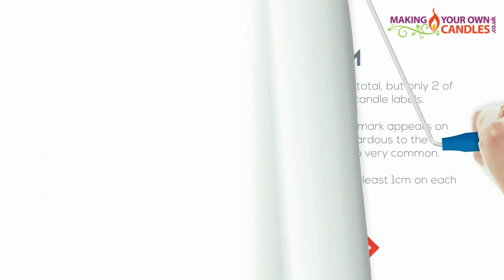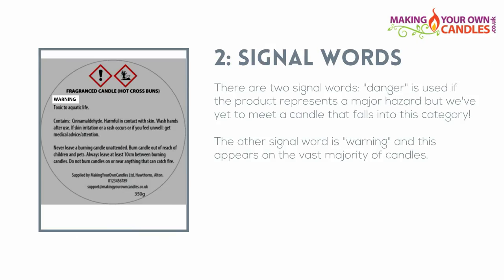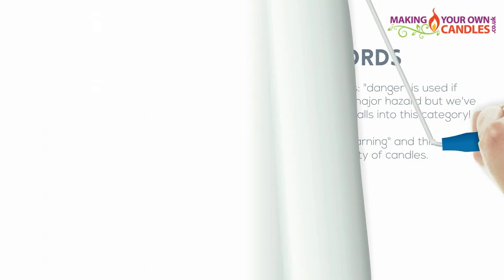Any label for a candle that contains hazardous ingredients must also contain a signal word. There are two signal words available: 'danger' is used if the product represents a major hazard, but we've yet to meet a candle that falls into this category. The other signal word is 'warning', and this appears on the vast majority of candle labels.